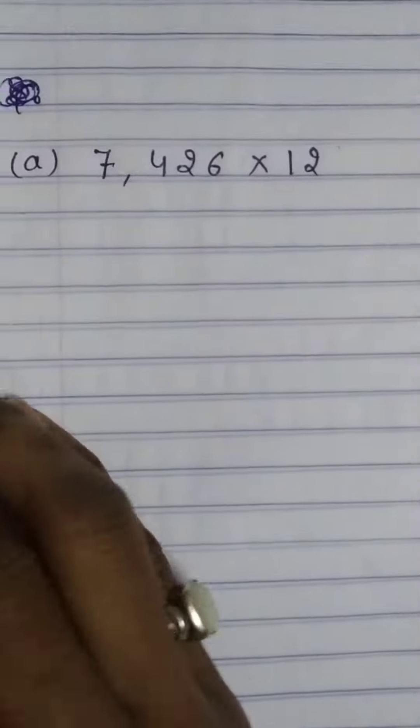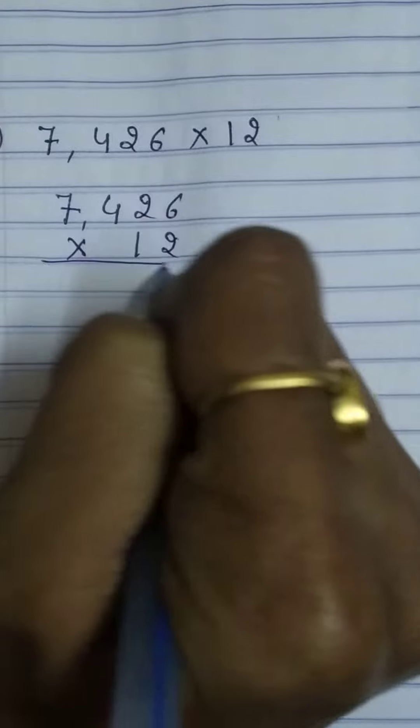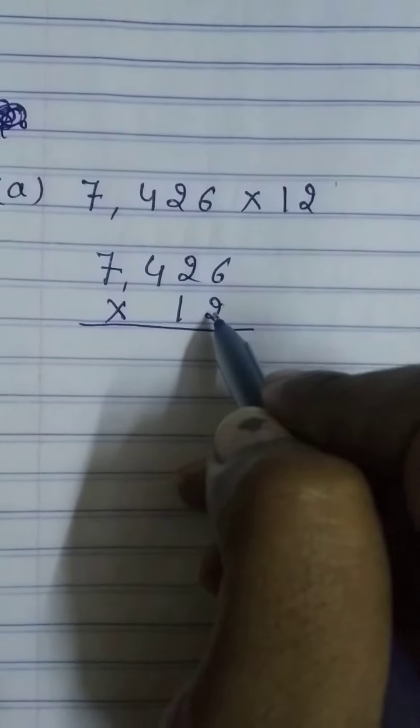This is your question number, question A. So, first we have to arrange it like this and we have to find it. First, you have to count table of 2. How many times? 6 times.